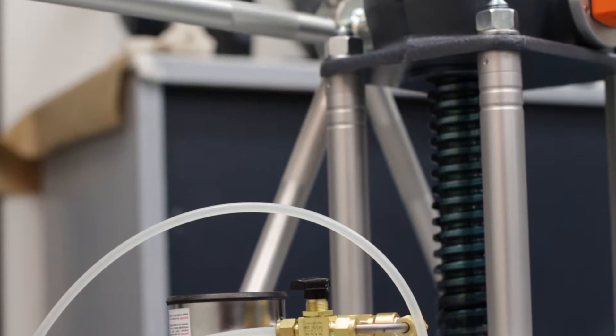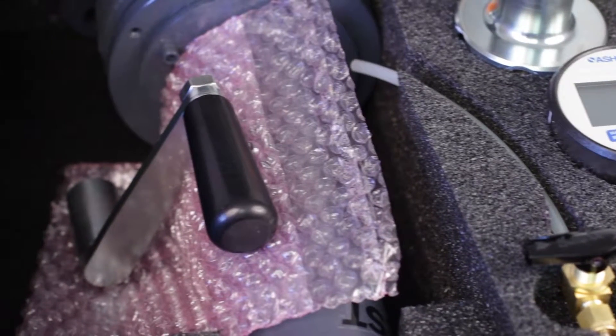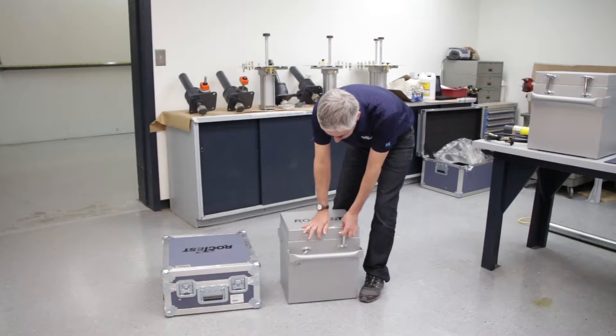When you purchase a Texan, you are buying a pressure meter that will perform consistently for years to come. Its compact design makes it easy to transport from your facility to your job site.